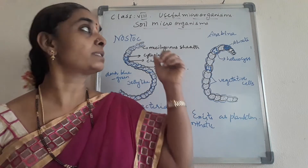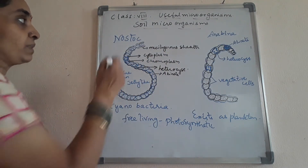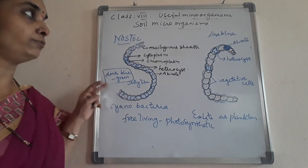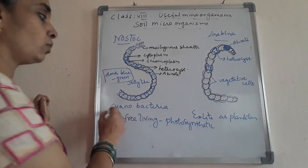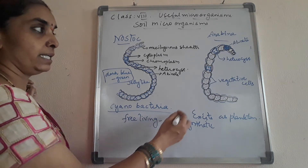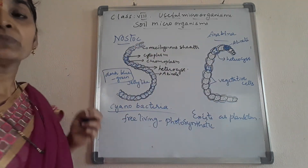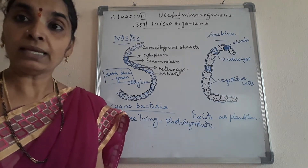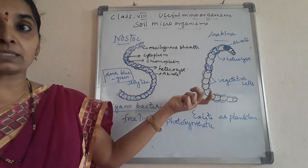Now let's look at some other microorganisms. See the picture on the board. This is Nostoc — it is a microorganism belonging to a blue-green filamentous form. Anabaena is another microorganism. Both belong to the Cyanobacteria phylum. There is also Azotobacter, a bacterium which also supplies nitrogen to plants.